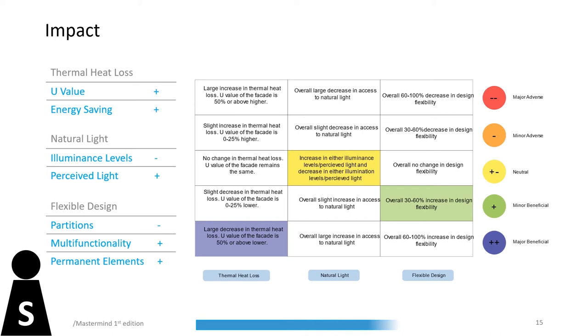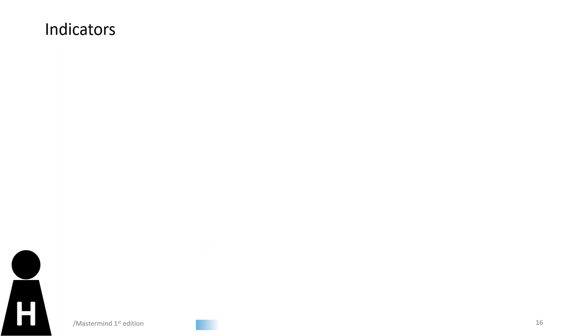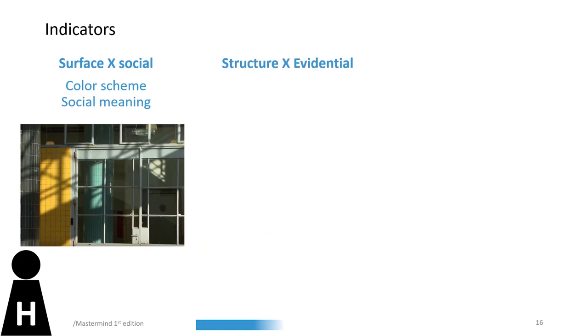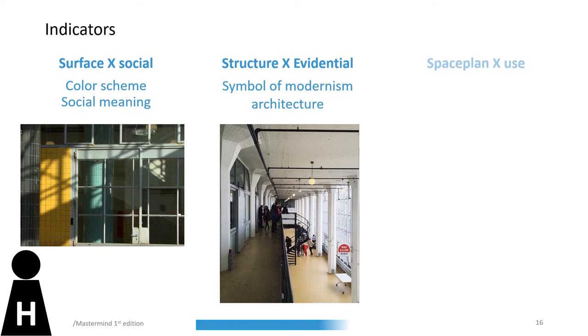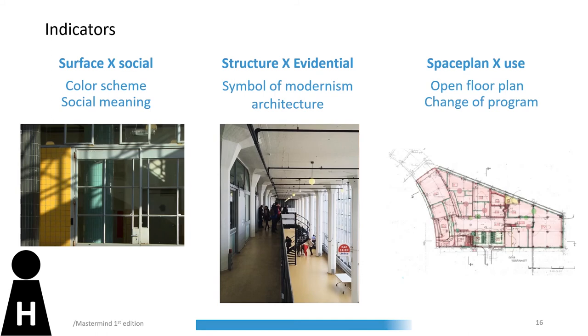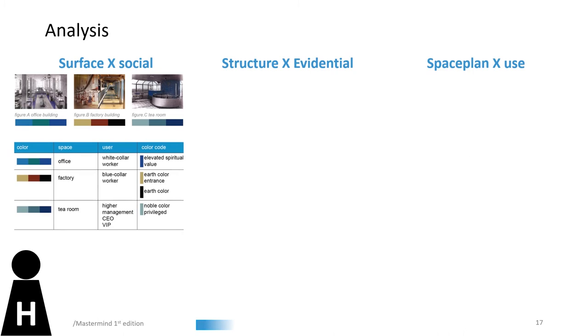The first indicator, surface and social, shows how changed the social meaning of colour in Van Nelle. Structure and evidential focused on how conserved the purity of structure as symbol of modernism architecture. Space plan and use was the impact on the open space plan related to the change of programme and function. Colour palette of surface and compare colour scheme and social meaning of colour as programme.